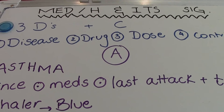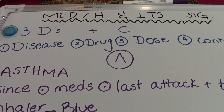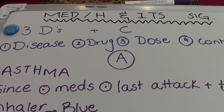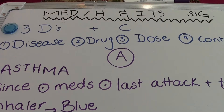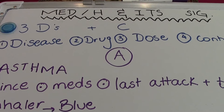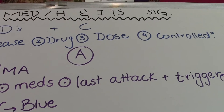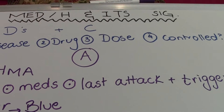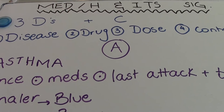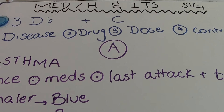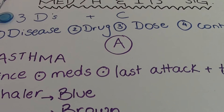When asking about any medical condition, there are three D's and one C that we need to always remember: what disease the patient has, what drug they're taking for it, what dose they're taking of the drug, and whether the disease is controlled or not. We're not really going to ask the patient these questions in these exact terms, but this is just so we can remember them.